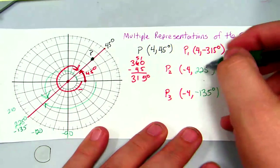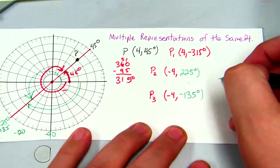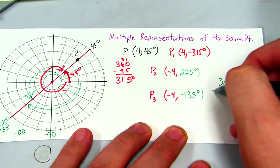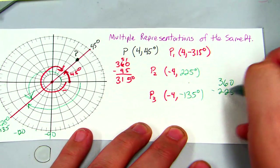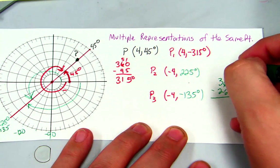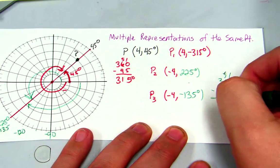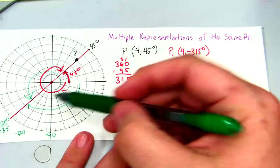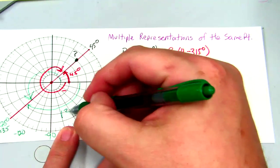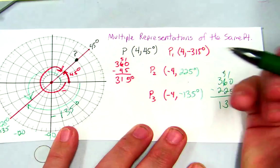Now, once we found 225, we could have taken 360 minus 225 degrees and got our negative 135 degrees. So that's 135 degrees in a negative direction.